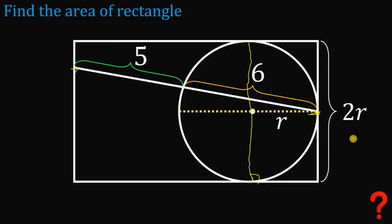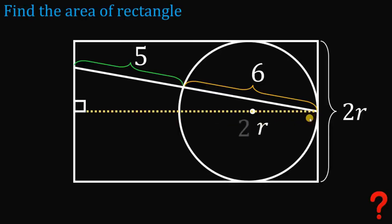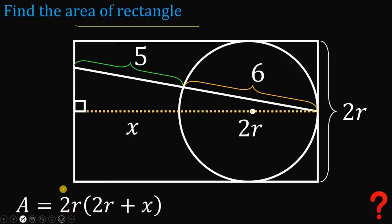Now we have the height of this rectangle. To find the base, let's extend this diameter to the other side of the rectangle. We create a right angle here, giving us a right triangle. This segment is also the radius, equal to R, and this diameter equals 2R. Let's call this new segment X, so the base equals X plus 2R.